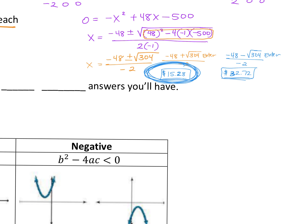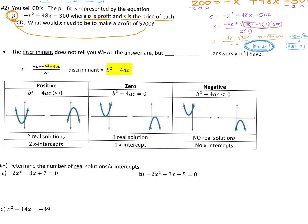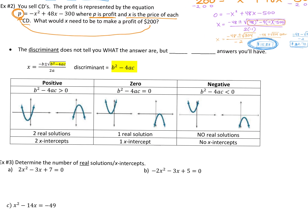One answer was because we added and one was because we subtracted — plus or minus. The discriminant: this is pretty straightforward and usually goes quite well for people. The discriminant doesn't tell you what your answers are — the quadratic formula gives X equals something. This does not do that. The discriminant tells you how many answers you'll have.